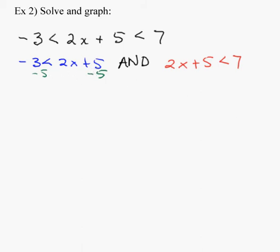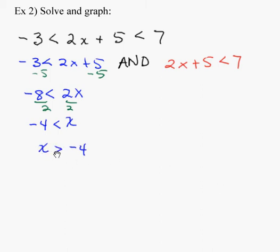Let's get x by itself. Subtract 5 from both sides: negative 3 minus 5 is negative 8. Divide both sides by positive 2 — dividing by a positive does not affect the order of the inequality. So negative 4 is less than x. Most of you like to see the variable on the left side, so let's flip it around to x is greater than negative 4. When you flip it around, be careful — like the alligator analogy, he eats the biggest number, so that alligator better still be eating the x. The blue inequality simplifies to x is greater than negative 4.